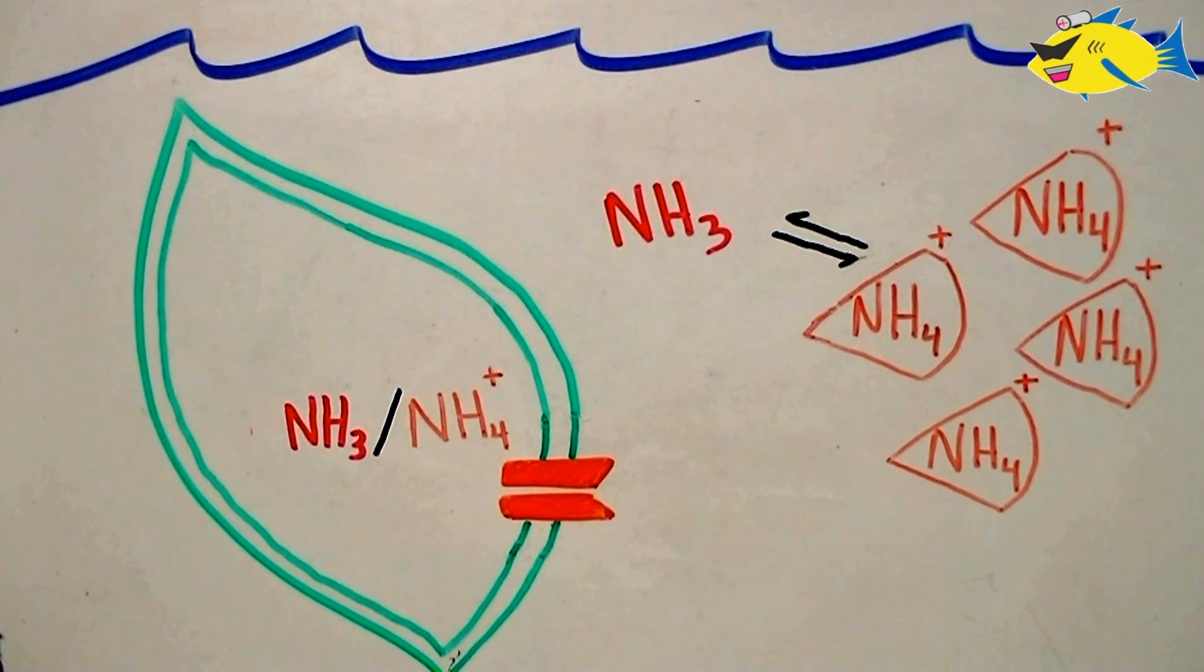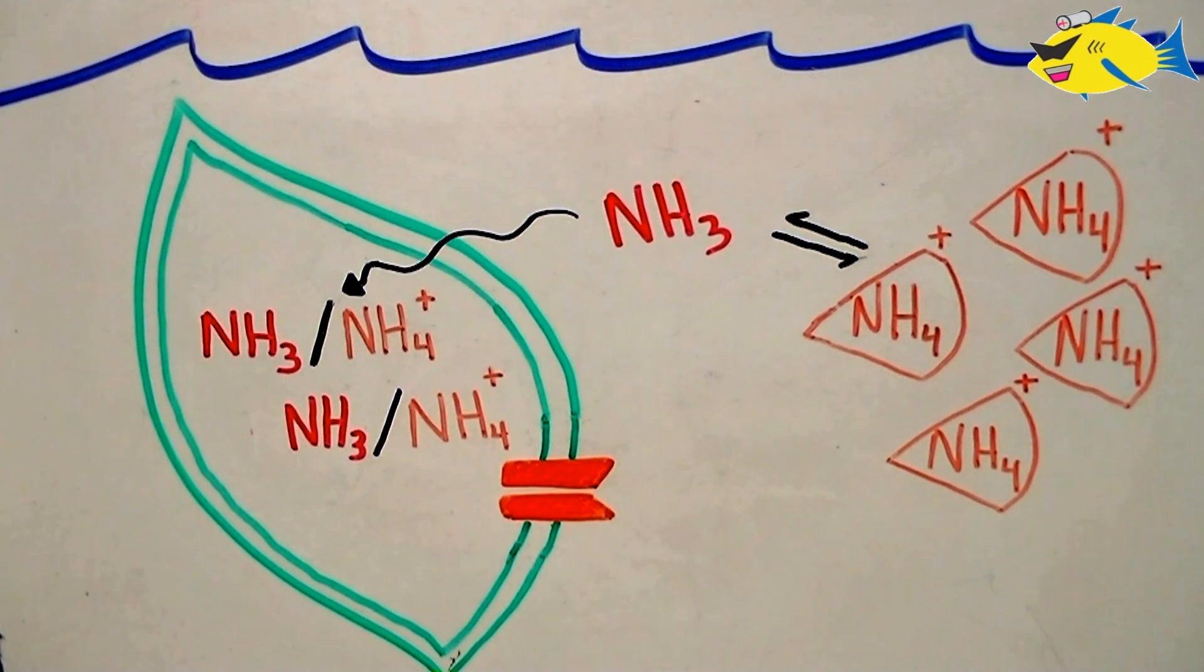This ammonium consumption, then by definition, will reduce the concentrations of toxic ammonia. Ammonia is non-polar and is free to diffuse into the plant cell where it can be used in the same way.